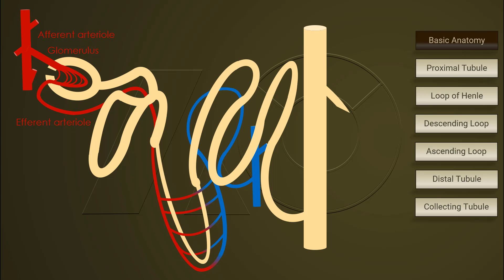Efferent arteriole exit glomerulus and continues to go around the structure of nephron to facilitate filtration of waste, electrolytes, and water into the collecting tubules to form urine.